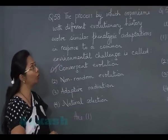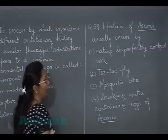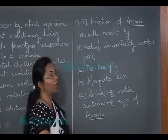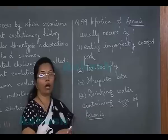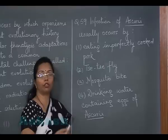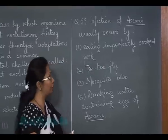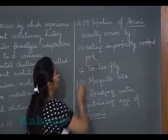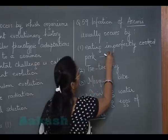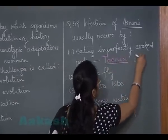Question 59: infection of Ascaris usually occurs by — Ascaris is a roundworm and its infection reaches the human body via contaminated food and water containing embryonated eggs of Ascaris. The first option, eating imperfectly cooked pork, would lead to infection of the tapeworm Taenia solium.